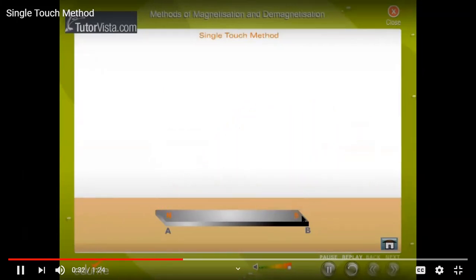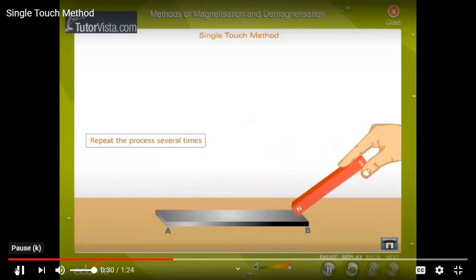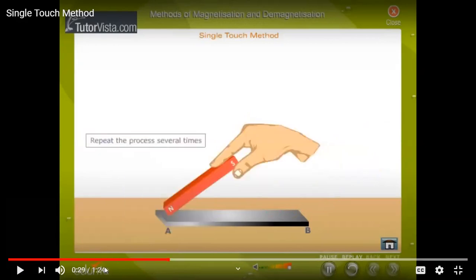When striking, you can see that this is north and this is south. After striking, you can look at the poles that are obtained.